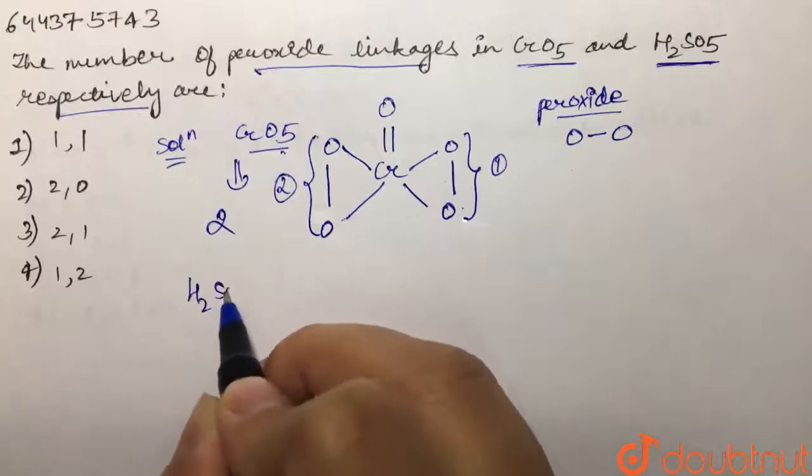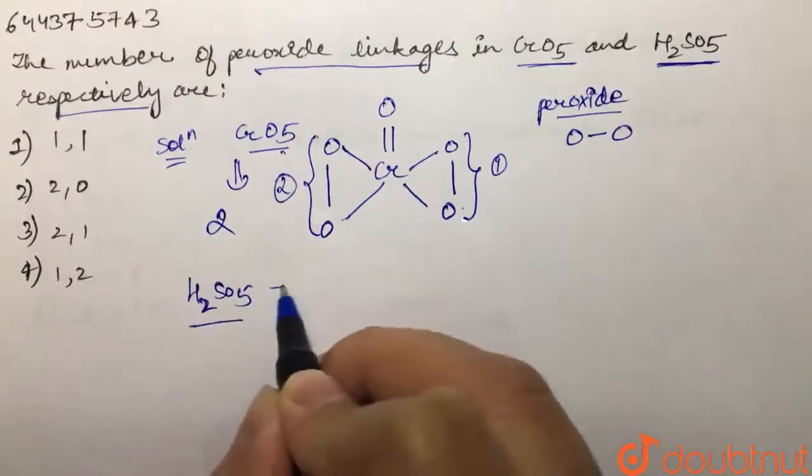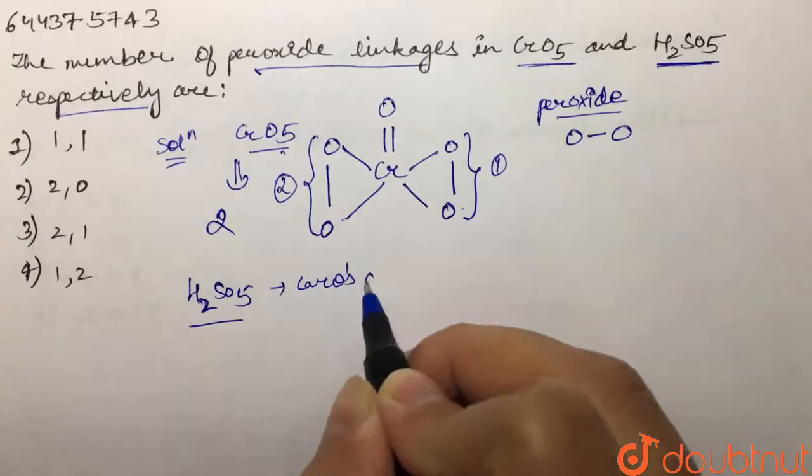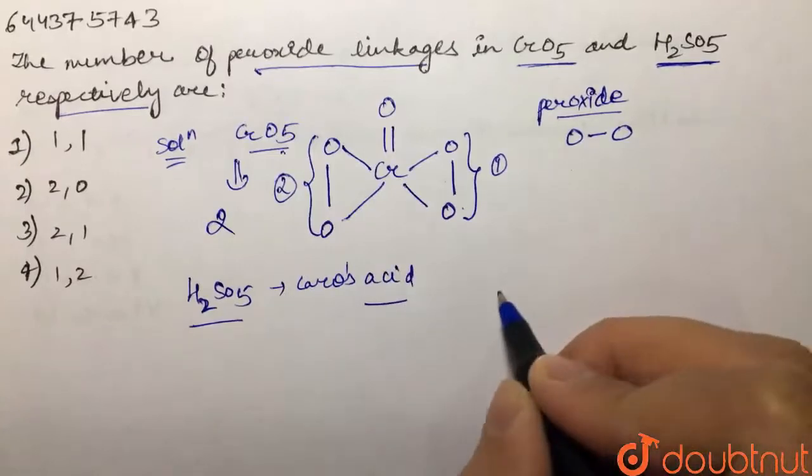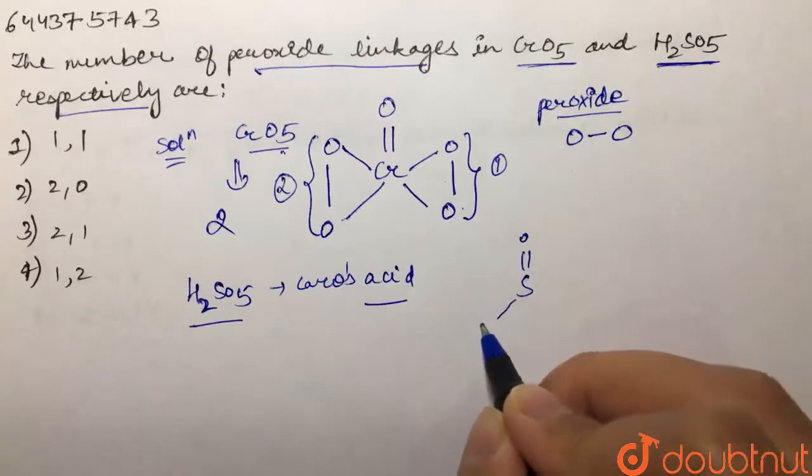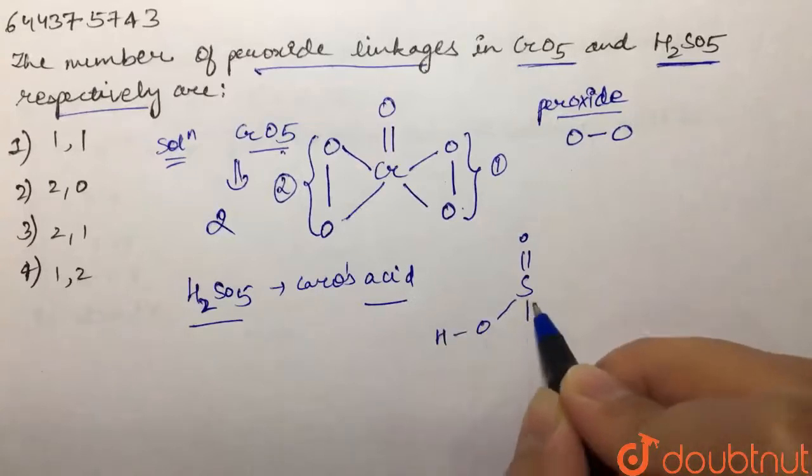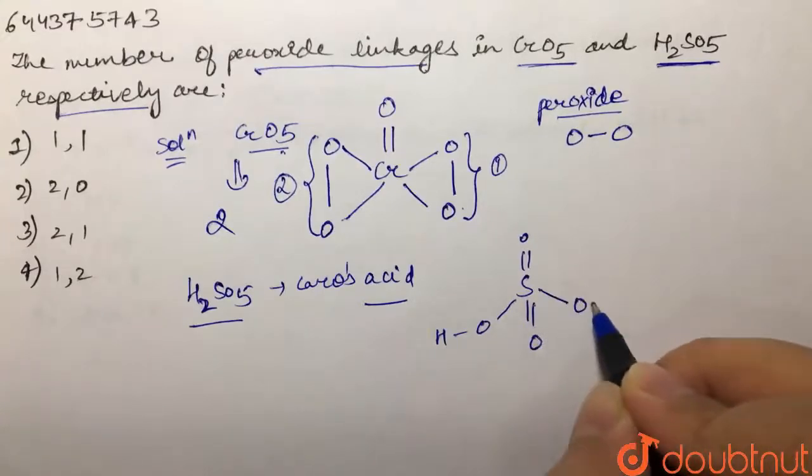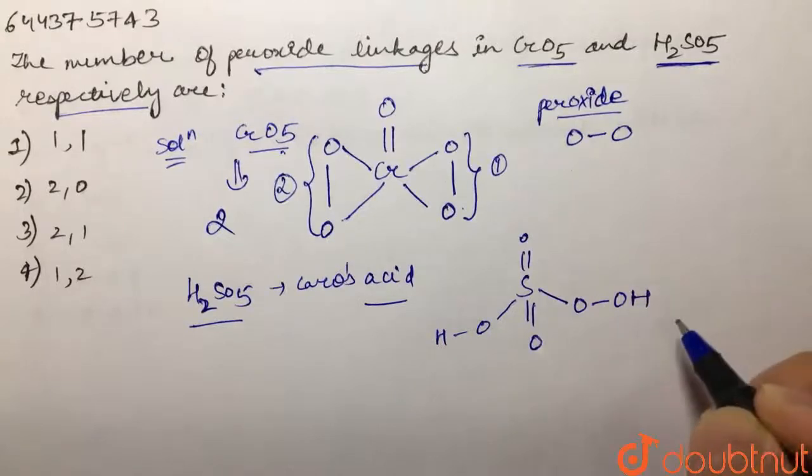Then if we talk about H2SO5, this is Caro's acid. And if we draw the structure, we have double bond oxygen, then we have OH, then we have double bond oxygen, and then we have O single bond OH.